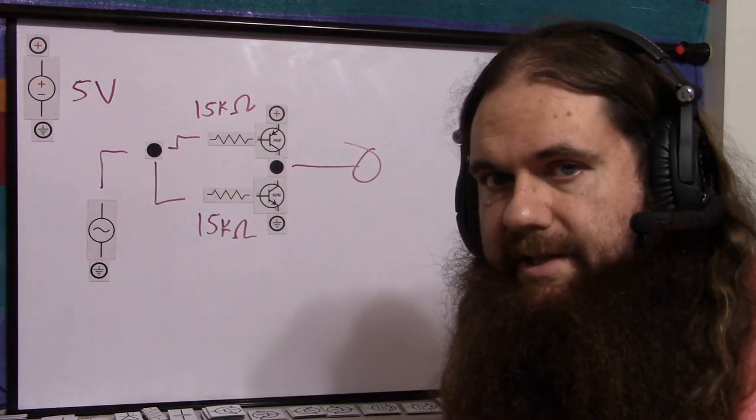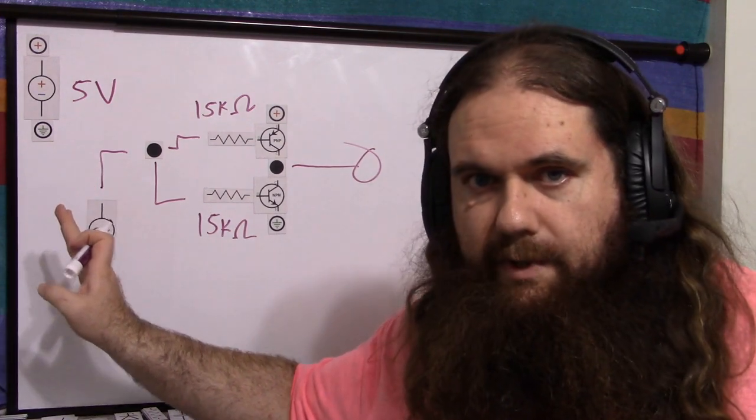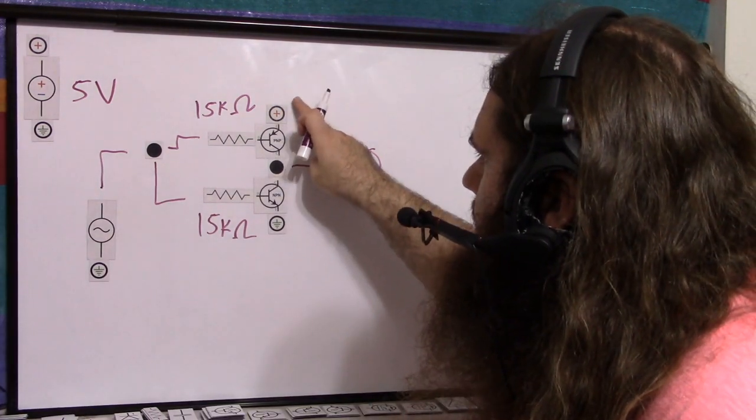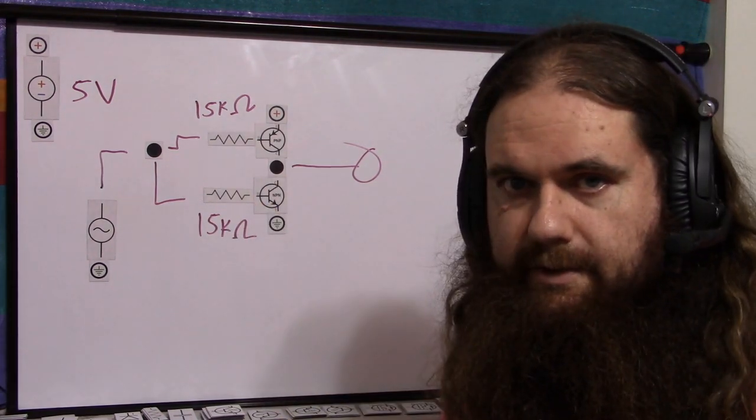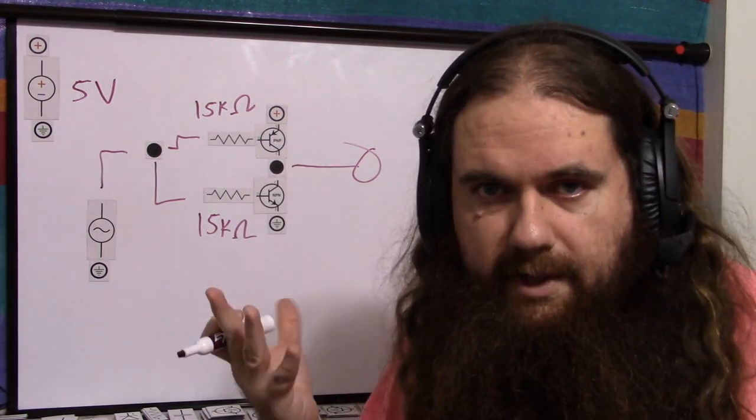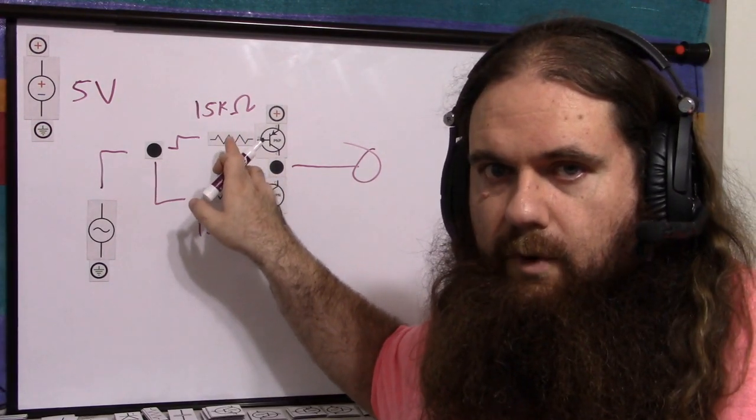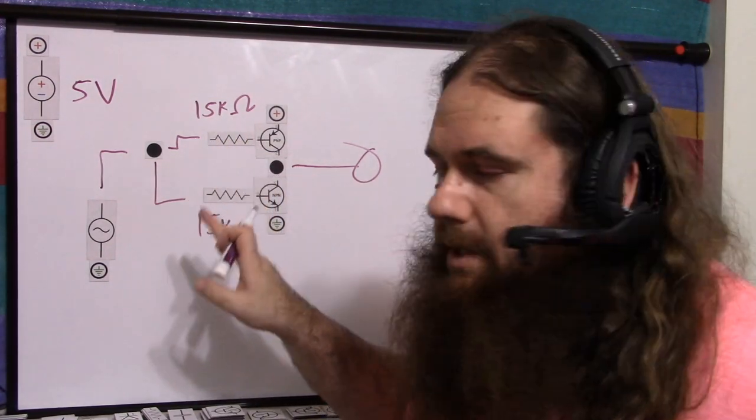If these were MOSFETs, we would be just fine. But if we tied the bases together with a resistor between there and the signal, then we'd have a current path: positive through emitter, base, base, emitter, and out to ground. So they would turn each other on and shoot through. So this allows us to have one on, or the other on at the same time.